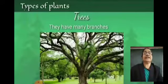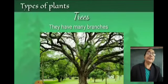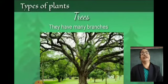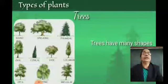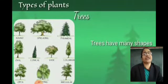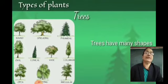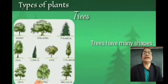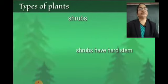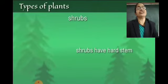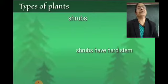Here you can see trees have many branches, and trees have many shapes. There are different types of trees you can see here. Examples of trees: banyan tree, coconut, mango tree, peepal tree, neem tree. These are the examples of trees.